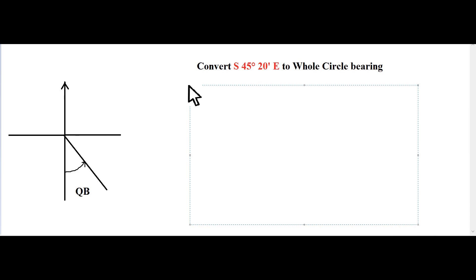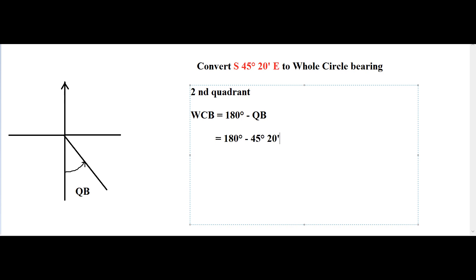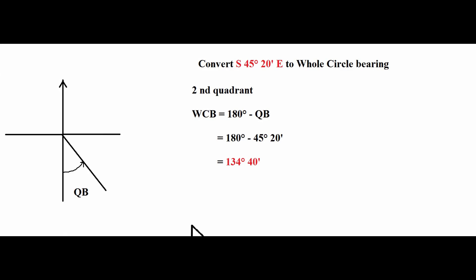Since the given quadrantal bearing is in the 2nd quadrant, the whole circle bearing equals 180 degrees minus the quadrantal bearing, which is 180 degrees minus 45 degrees 20 minutes, equal to 134 degrees 40 minutes. The answer is 134 degrees 40 minutes. By now you can solve this problem easily.